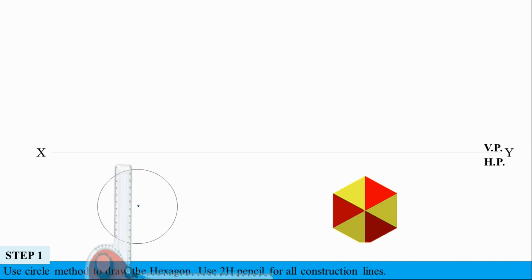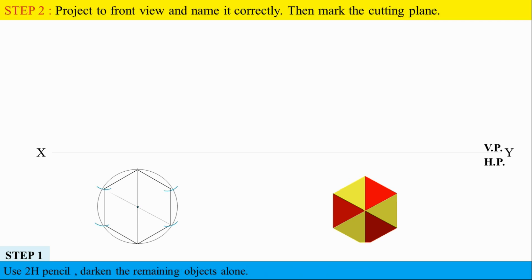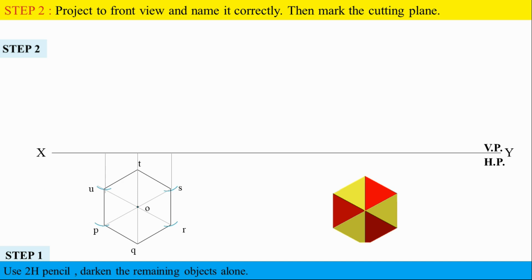We mark the hexagon and use the circle method. As we take the height, we cut it into width. You can see the height and width. You can use a 2H pencil. You can use the cutting plane on the remaining solid, and use naming. At the bottom there is a hexagonal plane. You can use the labels PQRS and the apex. You can use the front view projection. Mark the axis at 40 distance.